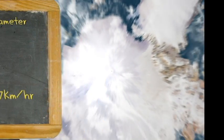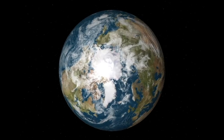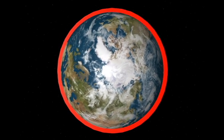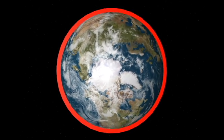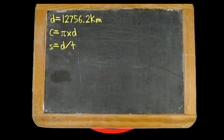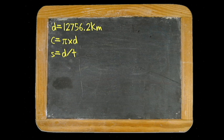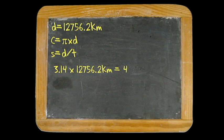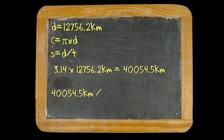If we do the same thing, but this time use a point on Earth's equator as a reference, we get something much different. The diameter of Earth is 12,756.2 kilometers here. Using the same formulas, we plug in 12,756.2 times π, which equals a circumference of 40,054.5 kilometers. Now we divide that by 24 hours, and we come up with a rotational speed of just under 1,670 kilometers per hour.